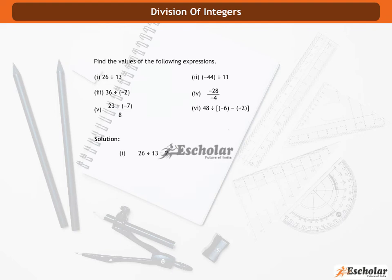Solution. 26 divided by 13 is equal to 2. Minus 44 divided by 11 is equal to minus 4. 36 divided by minus 2 is equal to minus 18. Minus 28 by minus 4 is equal to 7.